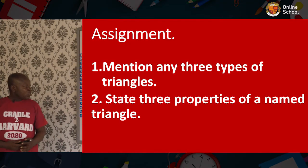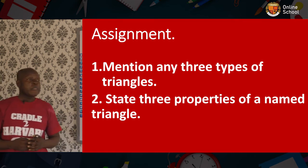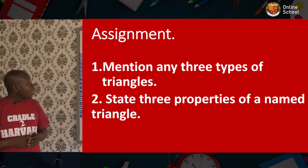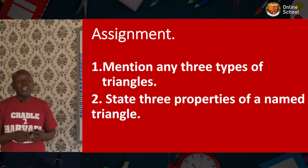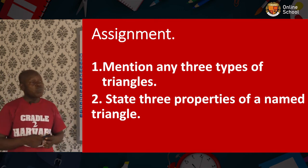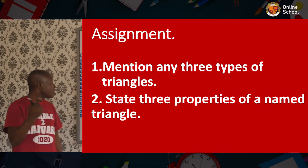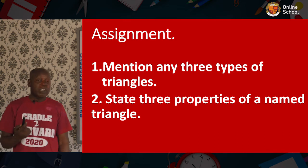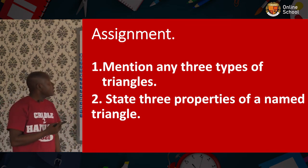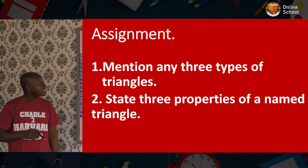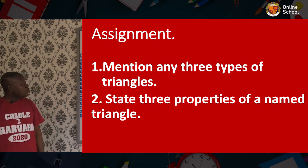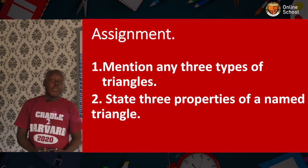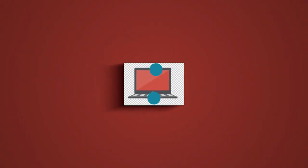So before we go to the assignment, let's recap what we discussed today. A triangle is a plane figure with three sides and three angles. The types of triangles are: equilateral triangle, isosceles triangle, right-angled triangle, and scalene triangle. For your assignment: number one, mention any three types of triangles. Number two, state three properties of a named triangle.